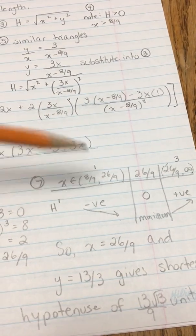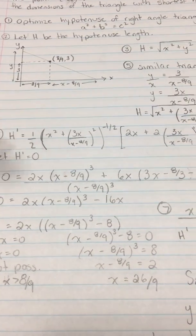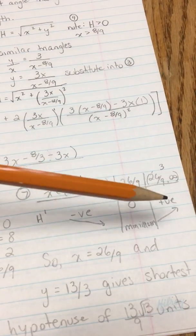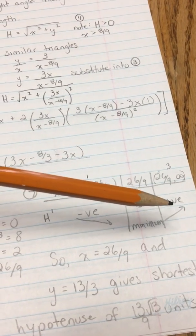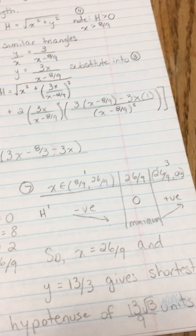I substituted the number 1 into my derivative equation (you can use any one of these three) and I got a negative value. Then I substituted the number 3 into the same place and got a positive value, indicating that the hypotenuse is indeed a minimum.